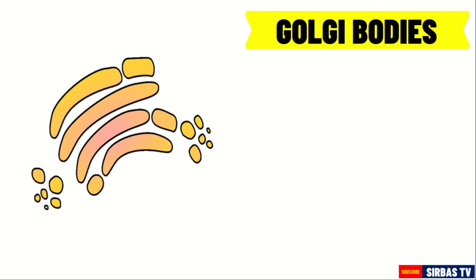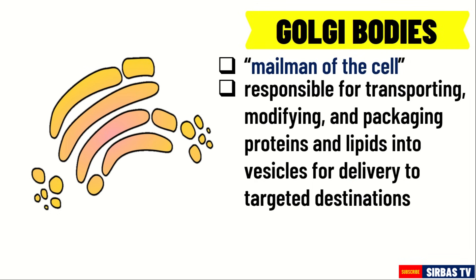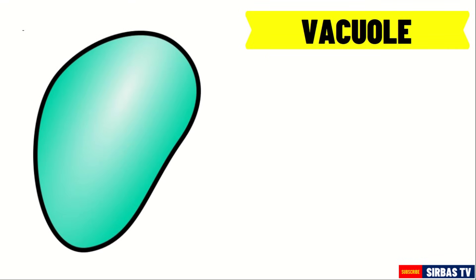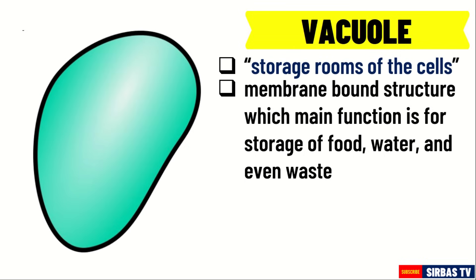Next, we have Golgi bodies or apparatus. The proteins manufactured in the endoplasmic reticulum are transported to the Golgi apparatus. The Golgi apparatus is called the mailman of the cell because it is responsible for transporting, modifying, and packaging proteins and lipids into vesicles for delivery to targeted destinations in the cell where they are needed. The next organelle are vacuoles. Vacuoles are coined as the storage rooms of the cell. Vacuoles are membrane-bound structures whose main function is storage, such as food, water, and even waste.